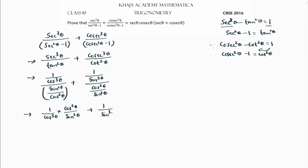So 1/cos³θ divided by sin²/cos² gives 1/(cos³θ) · (cos²/sin²), and similarly for the other term. The cos² terms cancel leaving one cos, and sin² terms cancel leaving one sin.